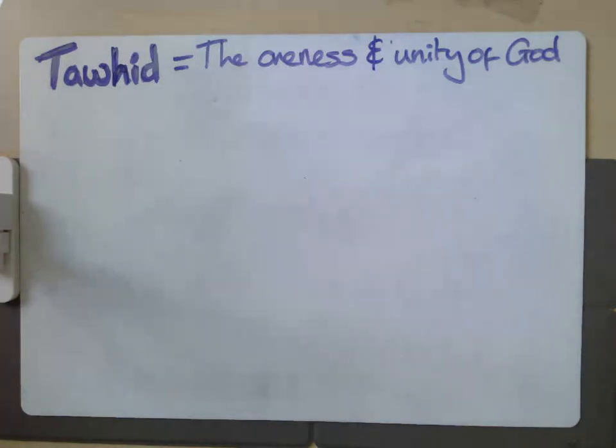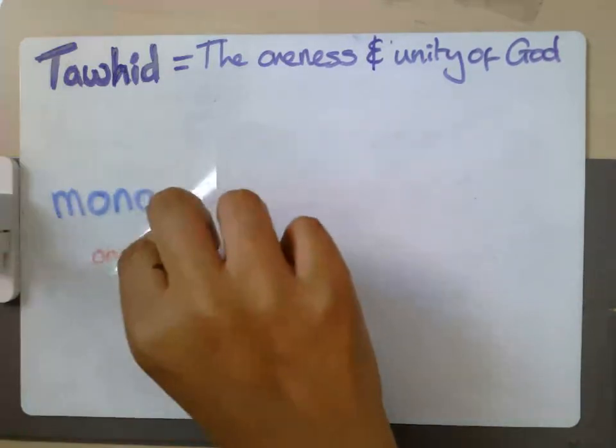So what does Tawhid mean to begin with? Well, we can take the literal definition of it as being the oneness and unity of God. That definition itself might seem like it's a fairly simple idea, oneness and unity of God. Well, what are we saying here? We're saying that Muslims believe that there is only one God.